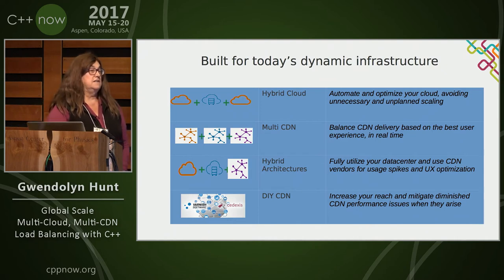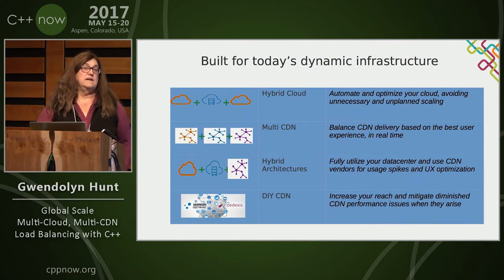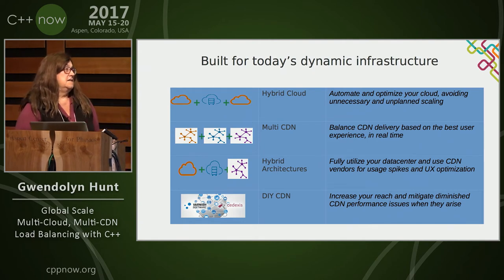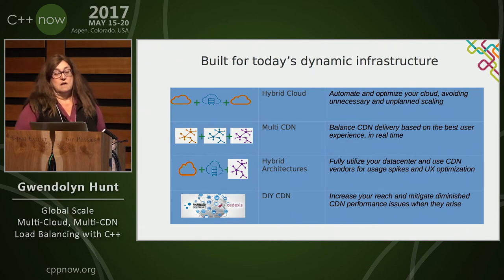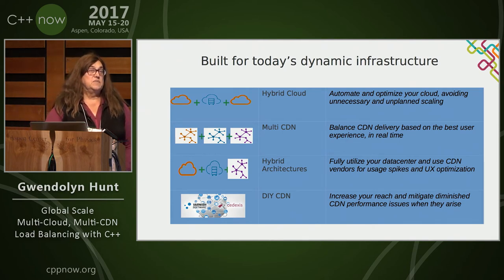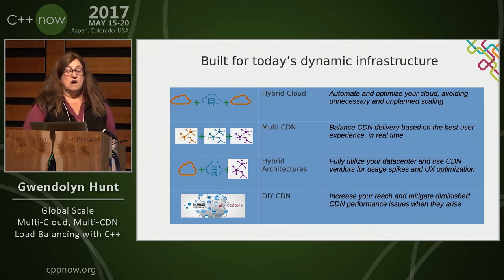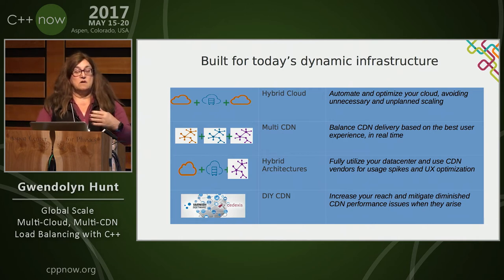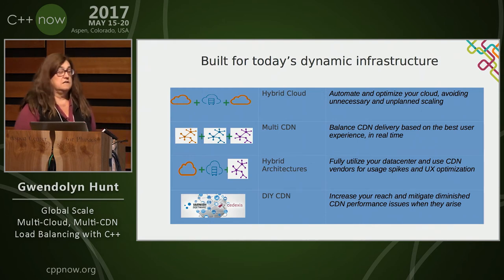This is built for today's dynamic infrastructure — a combination of hybrid cloud. What that means is a customer may have their own data centers, but they augment by using public clouds like AWS or Azure. Multi-CDN companies use more than one CDN, like Softlayer, Edgecast, and Level 3, or hybrid architectures with a combination of all. Some customers build their own CDN equivalents.